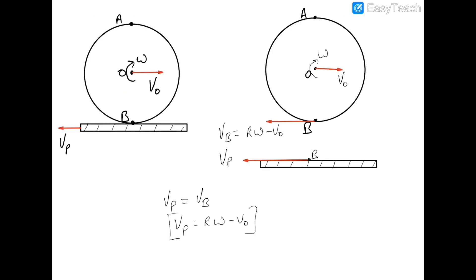If the moving surface was moving in the reverse direction, we would write the velocity of point B in the reverse direction, assuming r·omega is greater than v-naught in that case. To establish the pure rolling condition here, the velocity of point B should equal the velocity of the plank in the reverse direction: vb equals vp, giving r·omega minus v-naught equals vp.